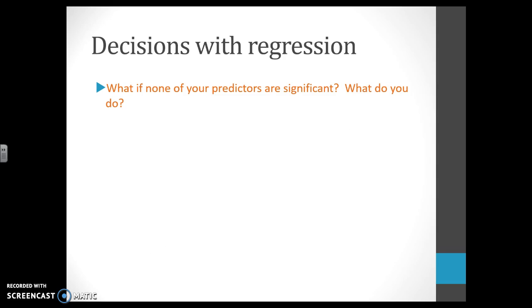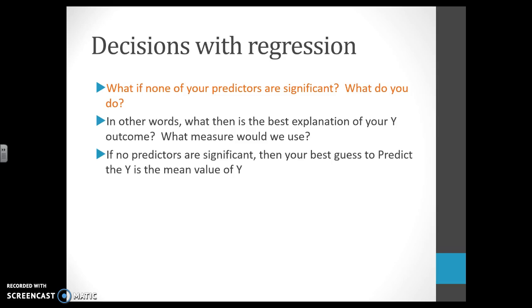This is going to happen to some of you. You're going to start with 10 predictors and you're going to find out that nothing is significant. In that case, what do you do? If you have none of your predictors that are explaining your dependent variable, your Y, then the best explanation of Y, the best predictor of Y in that case, is the mean. So the mean value, the average of Y, is your best predictor if you don't have anything that is significant. FYI, that's going to be on your final.